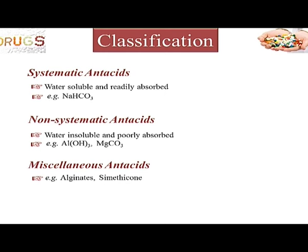Antacids in the non-systematic category include salts of aluminium, magnesium, and calcium. You can check pharmaceutical stores to see what salts are used as antacids. Apart from these, there are miscellaneous antacids such as alginates, which are polymeric compounds, and simethicone, which are also polymeric compounds similar to polymeric silica. Primarily, however, when we talk of antacids, we refer to those metal salts.